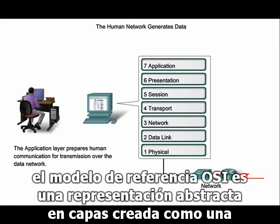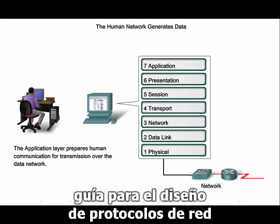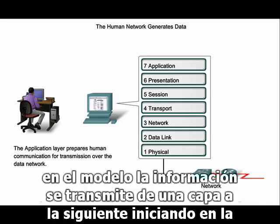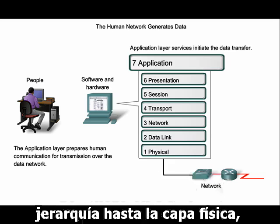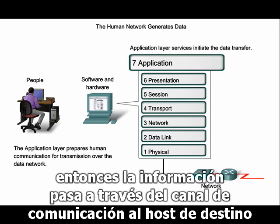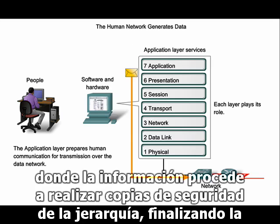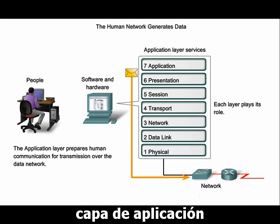The OSI reference model is a layered abstract representation created as a guideline for network protocol design. In the model, information is passed from one layer to the next, starting at the top with the application layer on the transmitting host, proceeding down the hierarchy to the physical layer. Then the information passes over the communication channel to the destination host, where it proceeds back up the hierarchy, ending at the application layer.